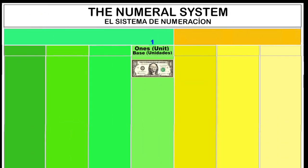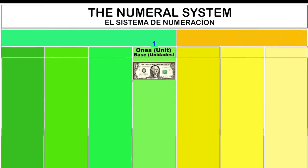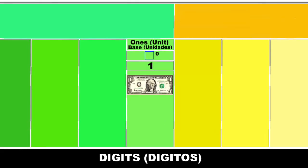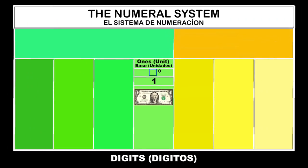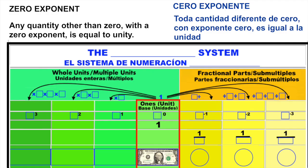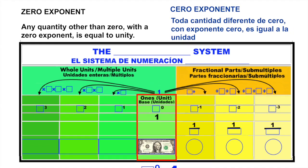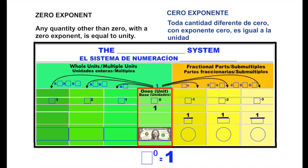A positional numbering system is a numeric value system. The base represents the quantity of digits used in the system. The unit is represented with a zero power.